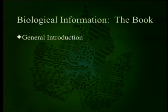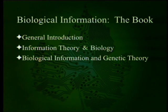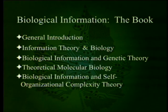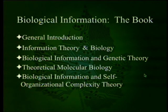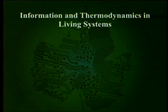The book starts with a general introduction, then covers information theory and biology, biological information and genetic theory, theoretical molecular biology, and biological information and self-organizational complexity theory. This week we're finishing up information theory and biology, then moving to biological information and genetic theory — a chapter by Jonathan Wells which is packed with stuff and very rich. That will be very interesting for most of us.